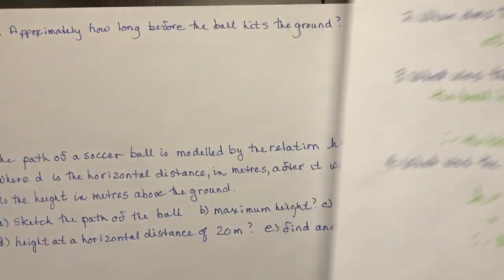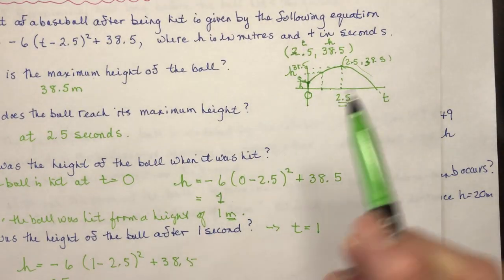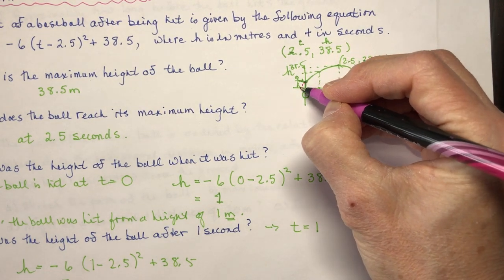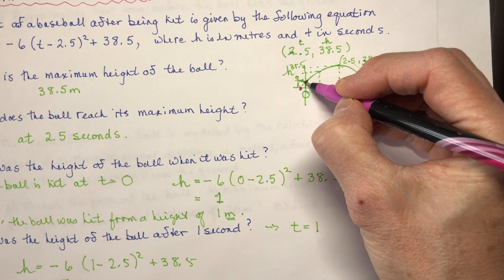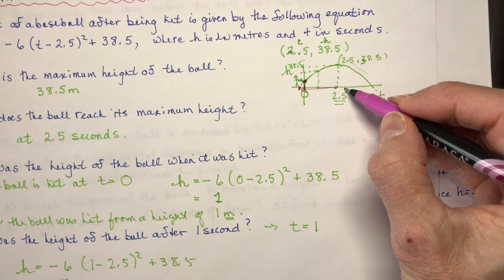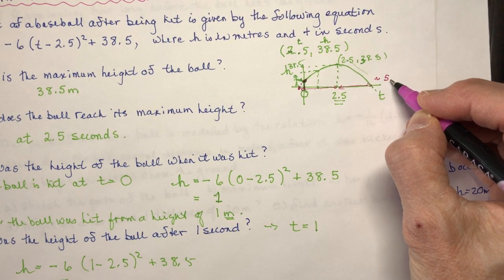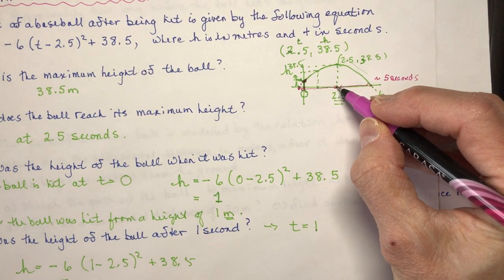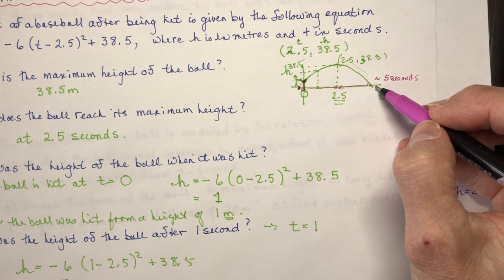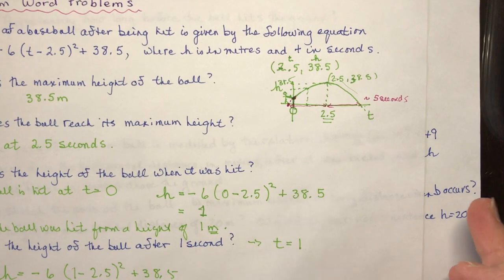Approximately how long before the ball hits the ground? Looking at the diagram, the ball was hit slightly above ground level. The distance from the vertex back to where it was hit is about 2.5 seconds, so it will be approximately another 2.5 seconds to come back down — about five seconds total. The question said approximately, so we weren't really expected to do a full calculation, but you could note the axis of symmetry at 2.5 seconds.